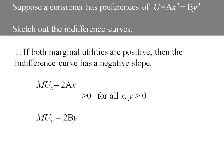I find the marginal utility of y by taking the partial derivative of utility with respect to y, and in this case that gives me 2by. This is also positive for any positive x and y that I could plug in. So since both marginal utilities are positive, we know our indifference curve slopes down.